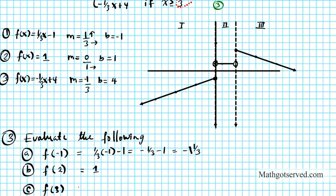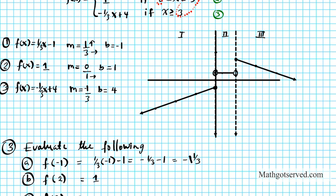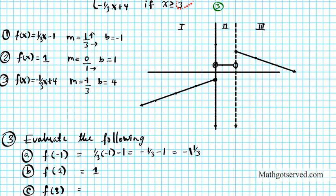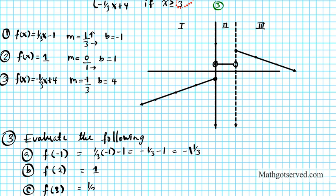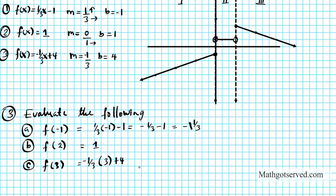f of three falls on the boundary, so the question is: does function two or function three win? We know that on the boundary, function two is excluded but function three is included, so we're going to use function three — because function three covers three and anything bigger. So f(3) equals negative one-third times three plus four, which gives us negative one plus four, which equals three.